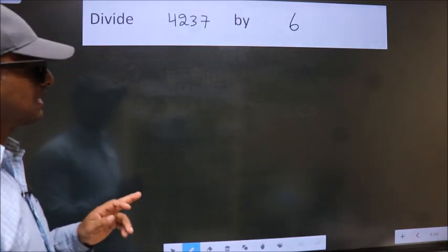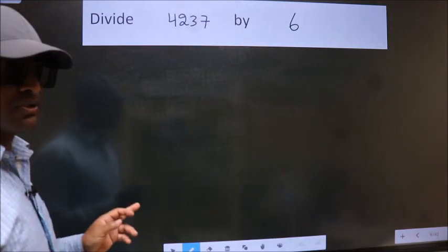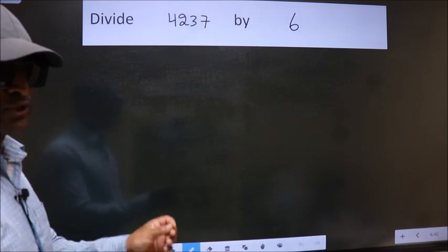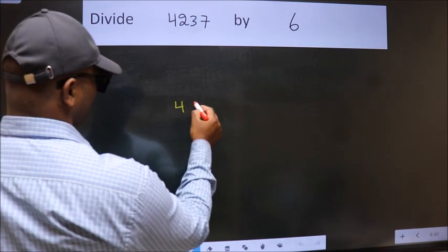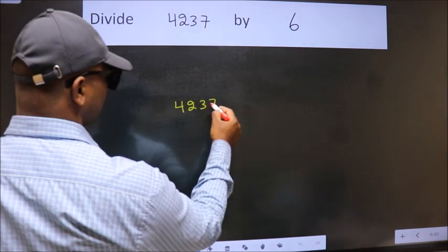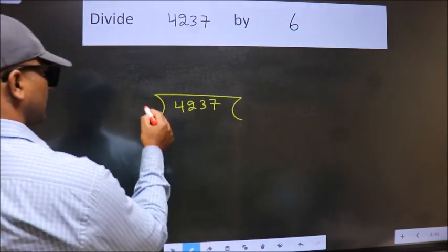Divide 4237 by 6. To do this division, we should frame it in this way. 4237 here, 6 here.